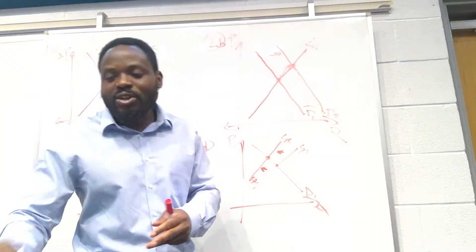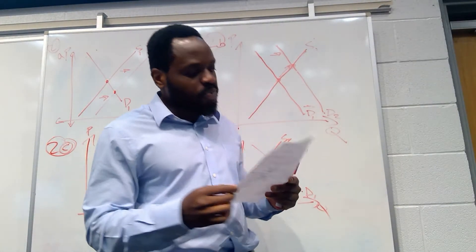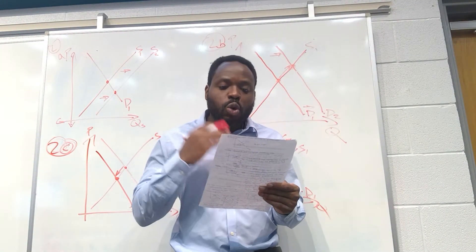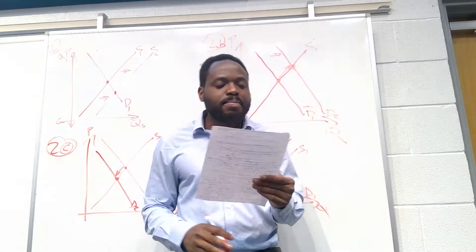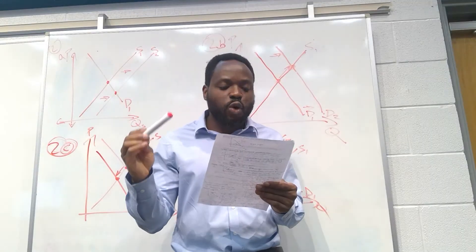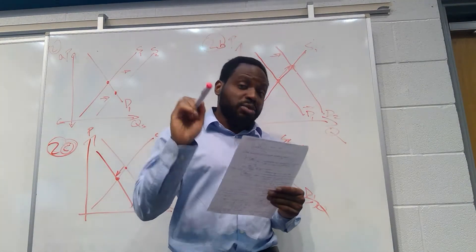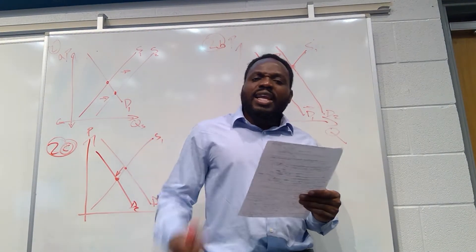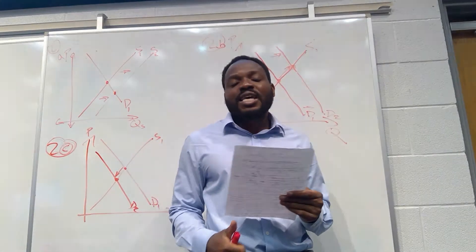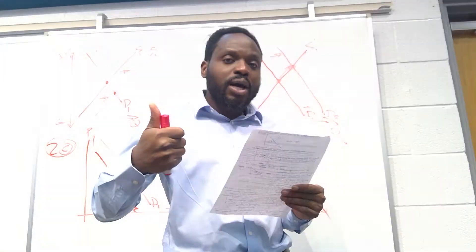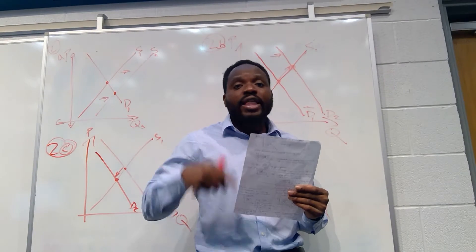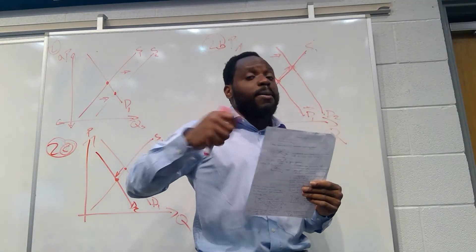Let's look at the tutorial questions. The first question says the number of owners of mobile phones has grown rapidly, and hence the demand for mobile phones has also grown rapidly. Yet the prices on mobile phones have fallen. Why? This is interesting. Let's consider the law of demand. The law of demand states that when prices go up, quantity demanded goes down. Conversely, when prices fall, the quantity demanded goes up, usually for normal goods.